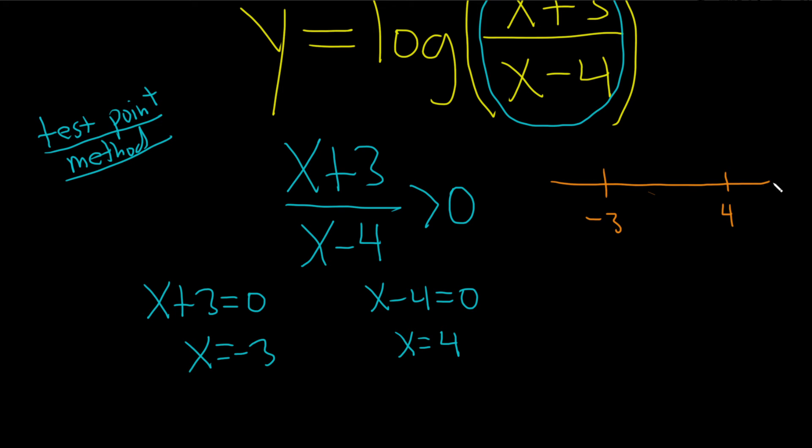You pick a number over here bigger than 4, plug it into this. If it's true, you shade. If it's not true, you don't shade. That's a lot of work. So I'm going to show you a trick.